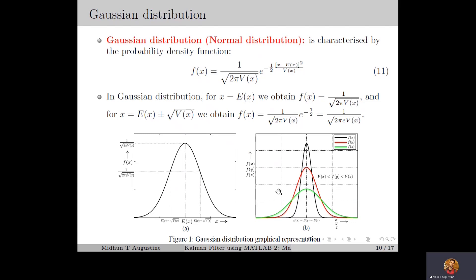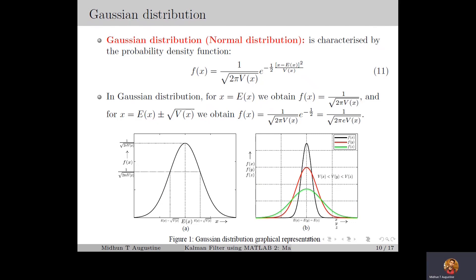So the peak value of the PDF depends on the variance: as the variance increases, the peak value decreases and the distribution becomes wider, meaning the randomness in x increases. This is illustrated in figure 1B, where we consider three random variables X, Y, and Z with Gaussian distributions such that V of X is less than V of Y is less than V of Z. X has minimum variance and Z has maximum variance. In the figure, X has a narrower distribution with the maximum peak value and Z has a wider distribution with the minimum peak value. As the variance decreases, the distribution becomes narrower, meaning the randomness of the variable decreases.